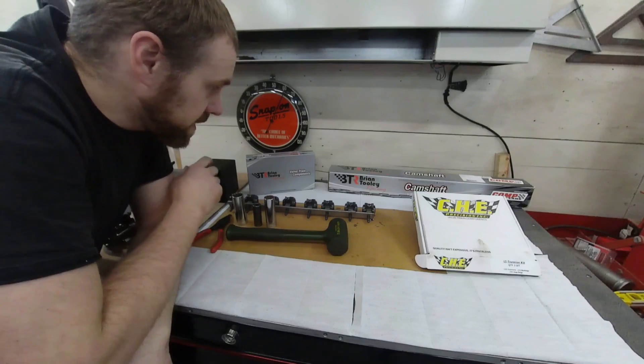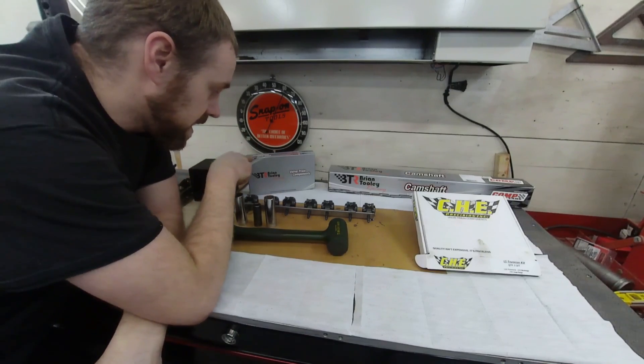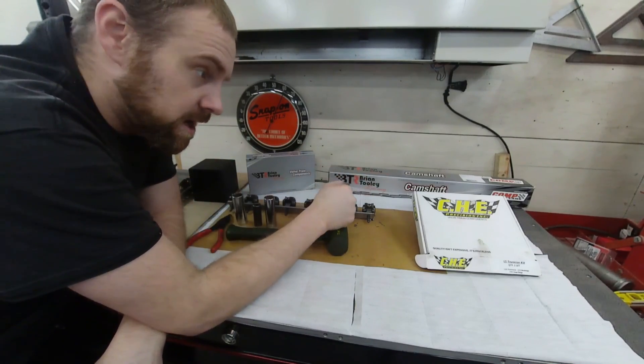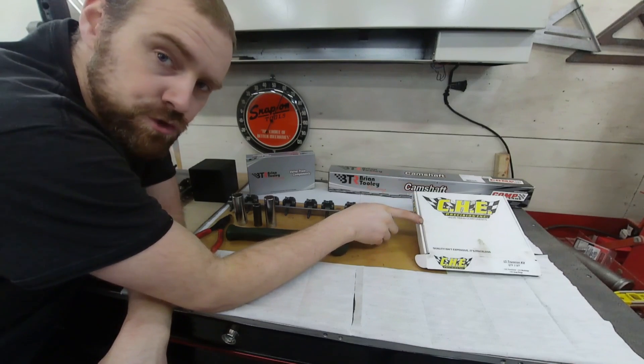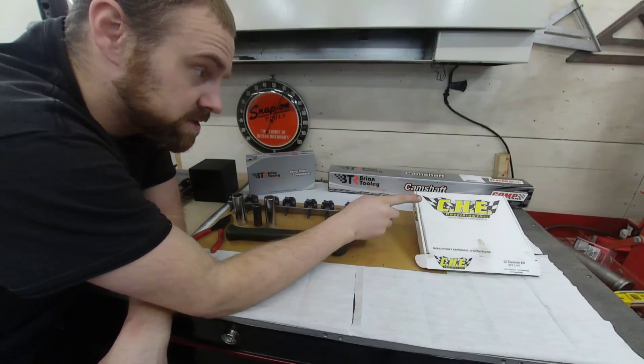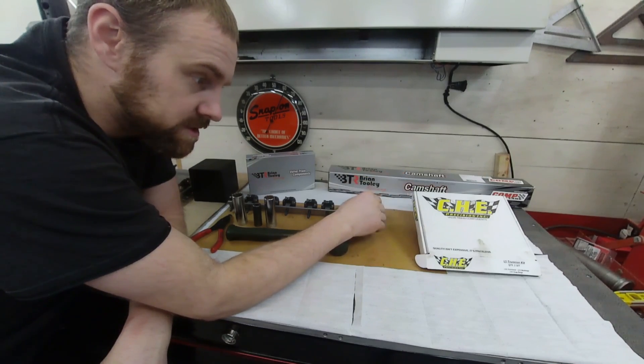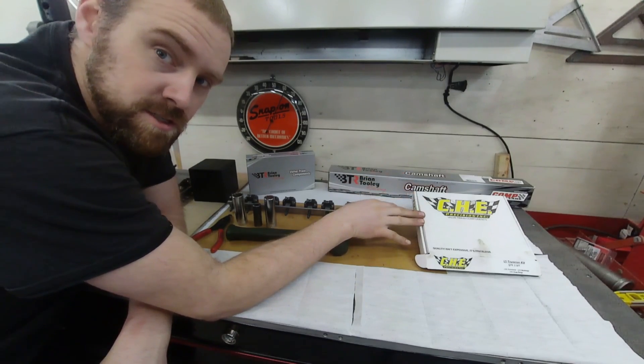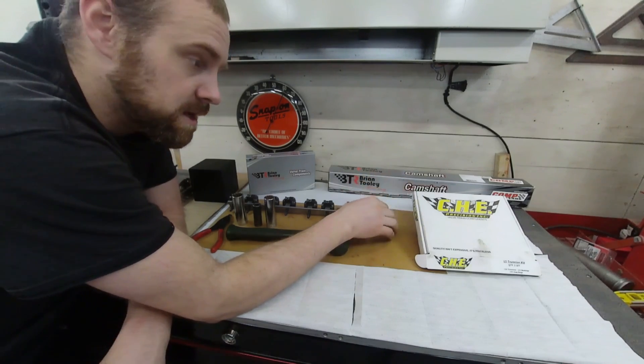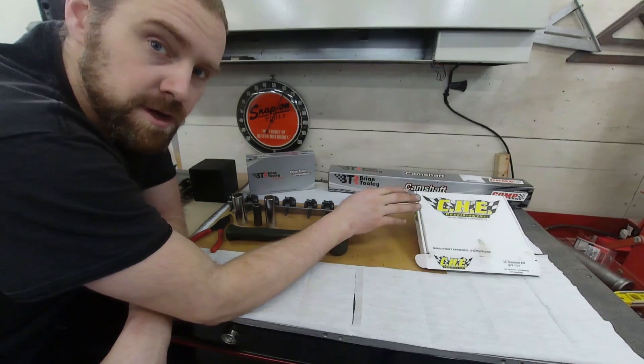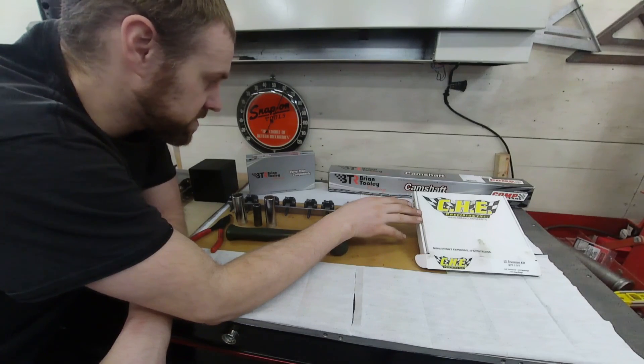Alright, you can see I have some components laying here. This particular car is getting a full BTR kit upgrade along with the trunnion upgrade. Now this trunnion upgrade is from CHE—they make valve train components—and this is probably the best kit I've seen to date. There's other kits available, but I'll explain why this one is so good in just a second.